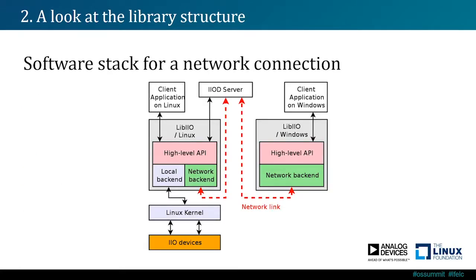The software stack shows a client-server connection. On the right, there is a client application that, for example, runs on Windows, uses LibIIO, calls the API, and through the network backend sends commands to the IIOd server. The IIOd server, in turn, recognizes the commands and uses LibIIO through the high-level API and local backend to interact with the IIO devices. The job of the IIOd server is to stay always open and listen for potential new connections with other clients, basically sharing the local backend through the network to clients.